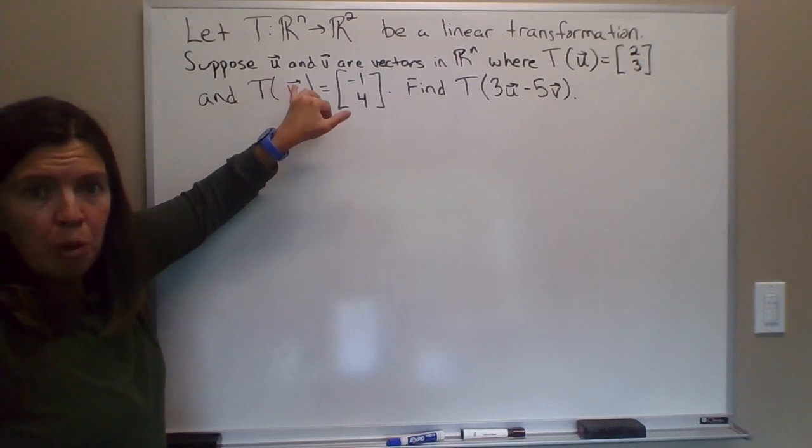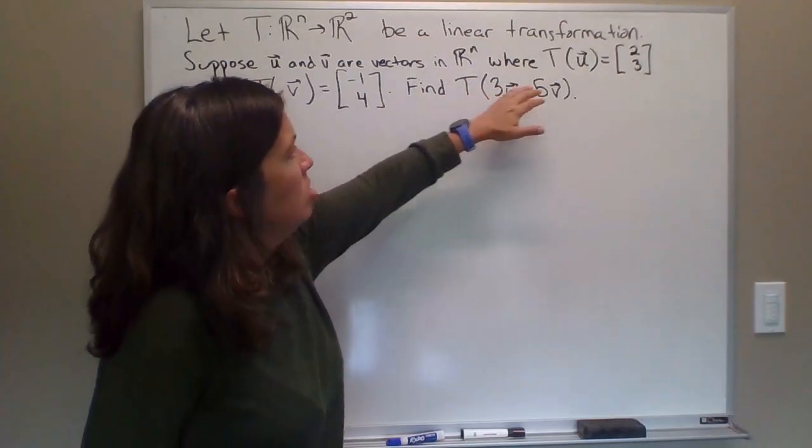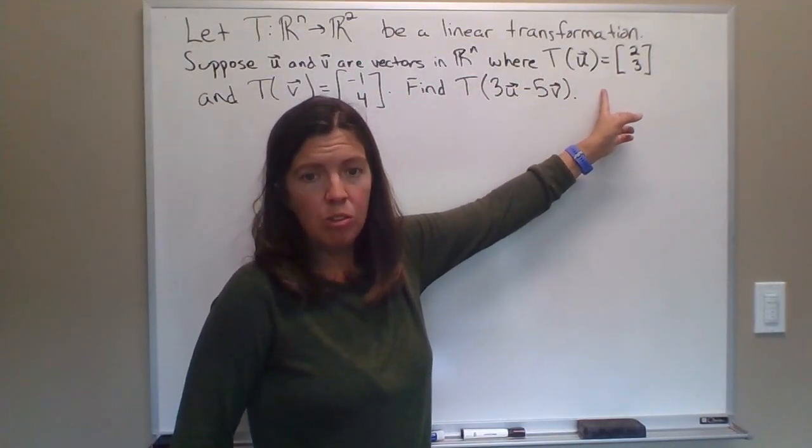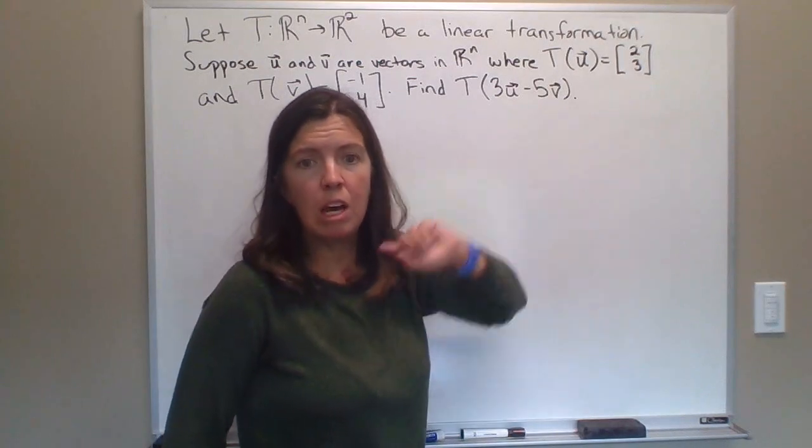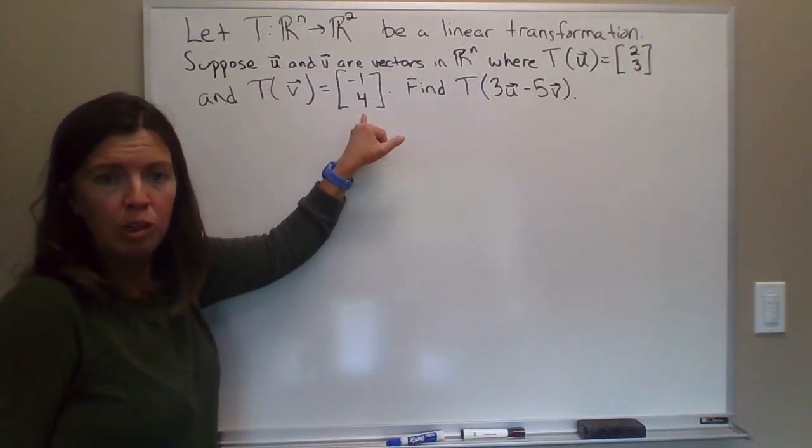Also, we want to suppose that u and v are vectors in Rn, in the domain, such that T(u) gives us this output vector. So u is just some vector in the domain that gives us [2,3] as the output vector, and v is some vector in the domain that gives us [-1,4] as its output.